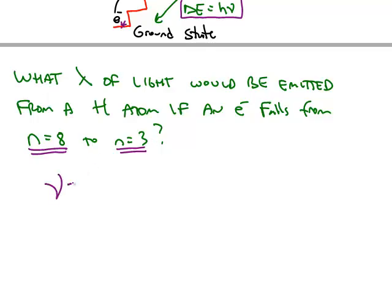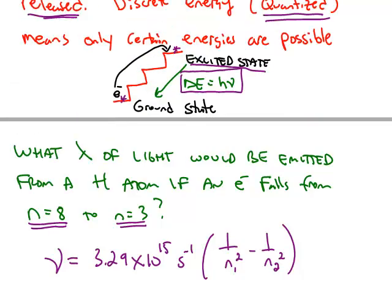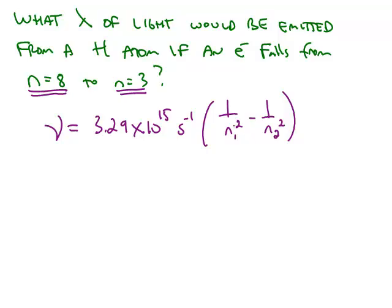And then we have the n1 squared and the n2 squared. n1 and n2, it really doesn't matter which one you call 1 or 2, because we're calculating a difference between two states. If you choose the wrong way to do this, you're going to get a negative frequency, which really doesn't have physical meaning. It just means the energy is being released.